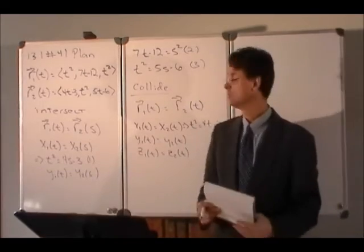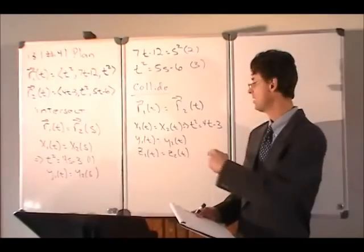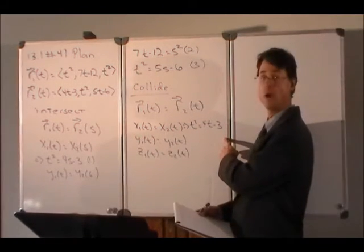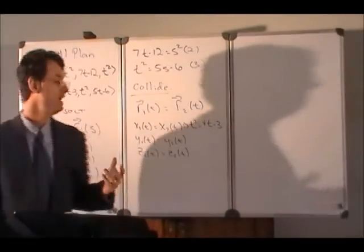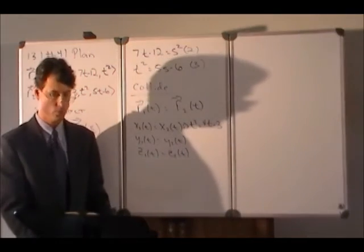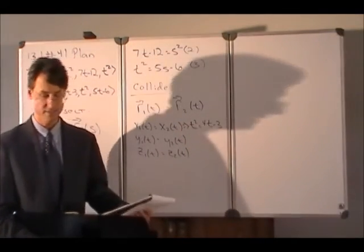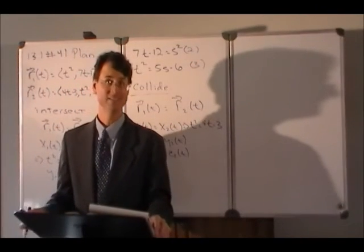The only unknown is t. So we'd solve each quadratic, find the two values of t that solve the x equation, the two values of t that solve the y equation, the two values of t that solve the z equation. And then if there's one value of t that solves them both, then we know that there's a collision. If not, then there's no collision because we're not in the same place at the same time.